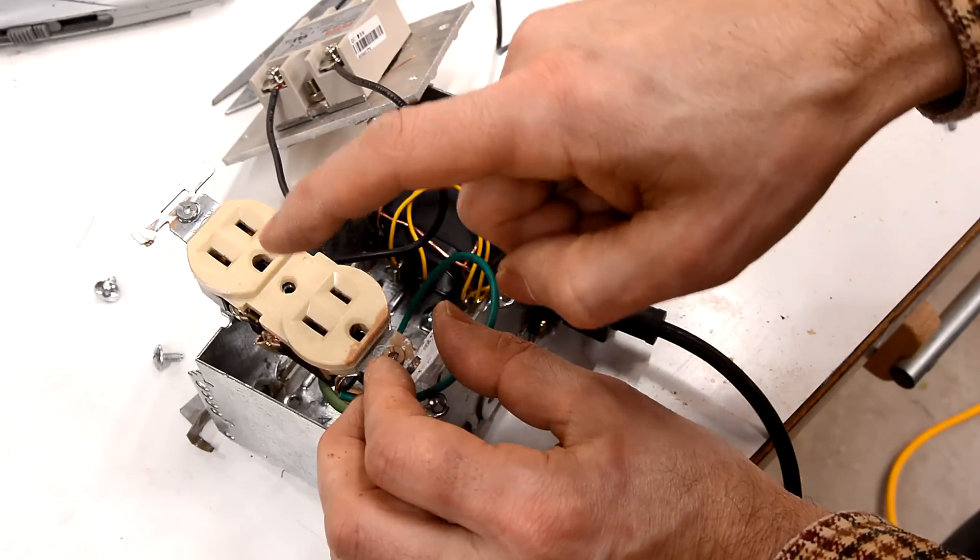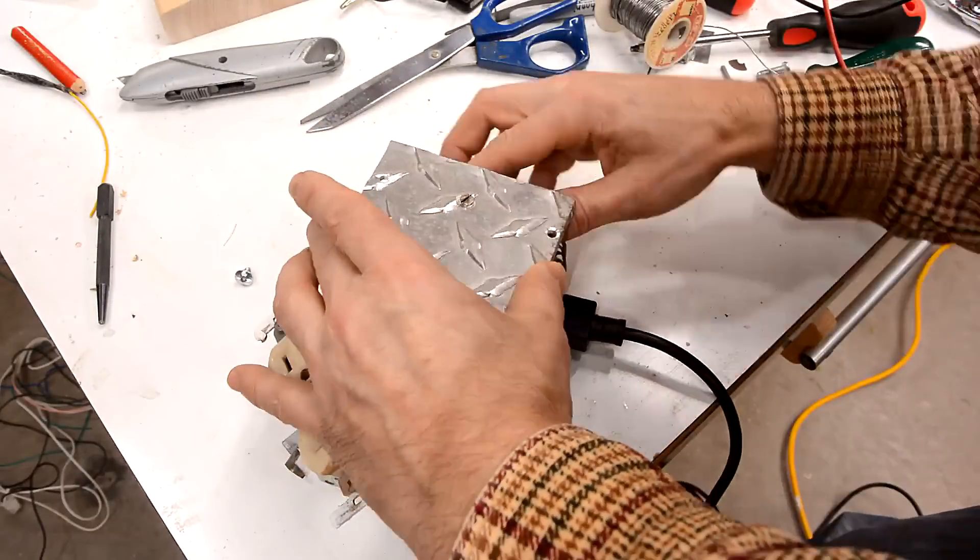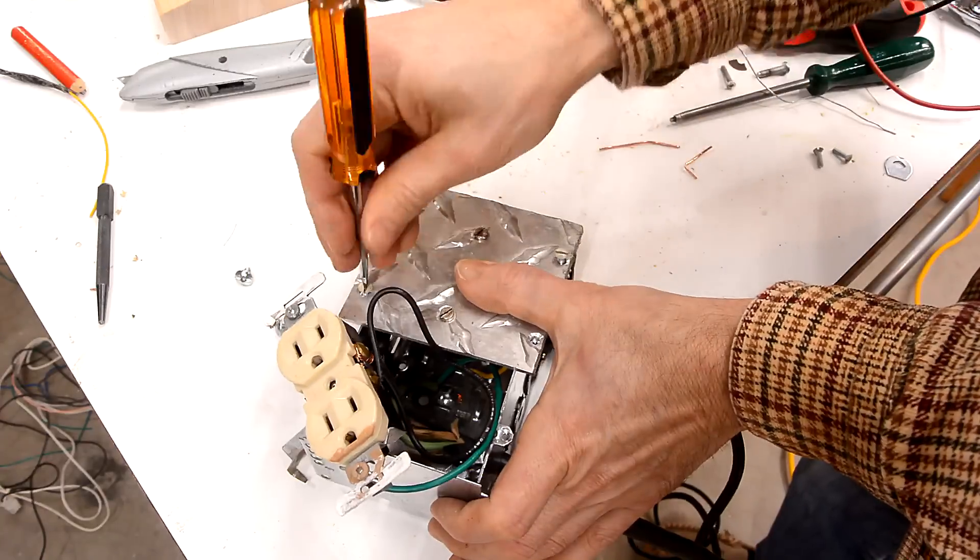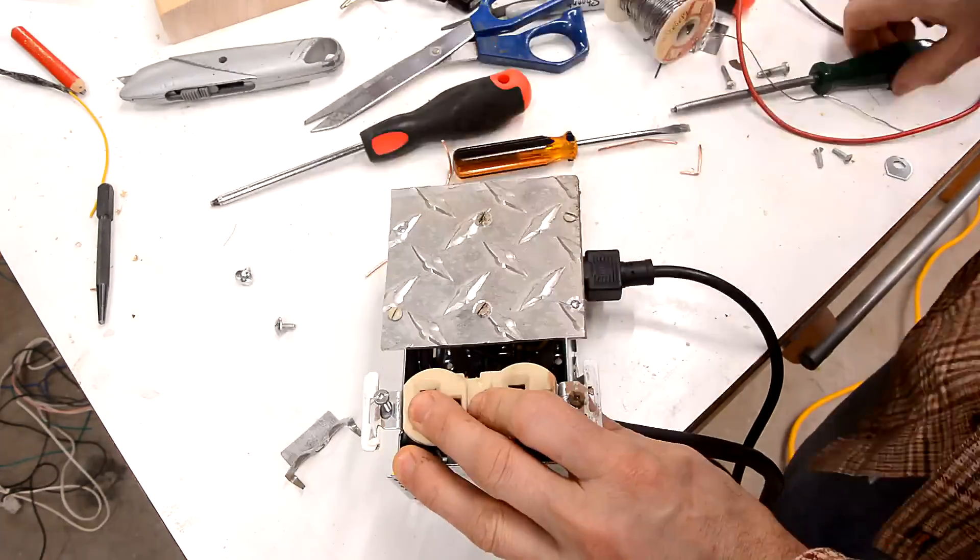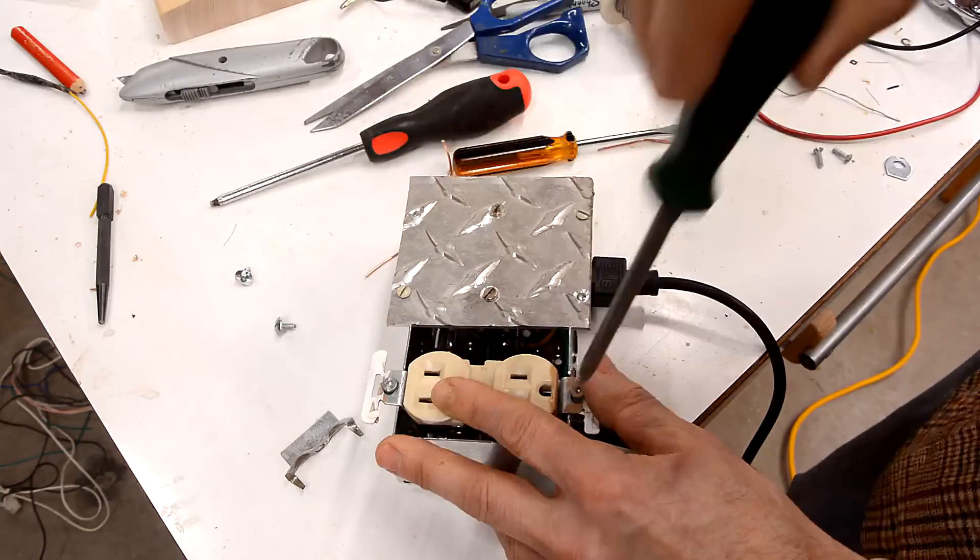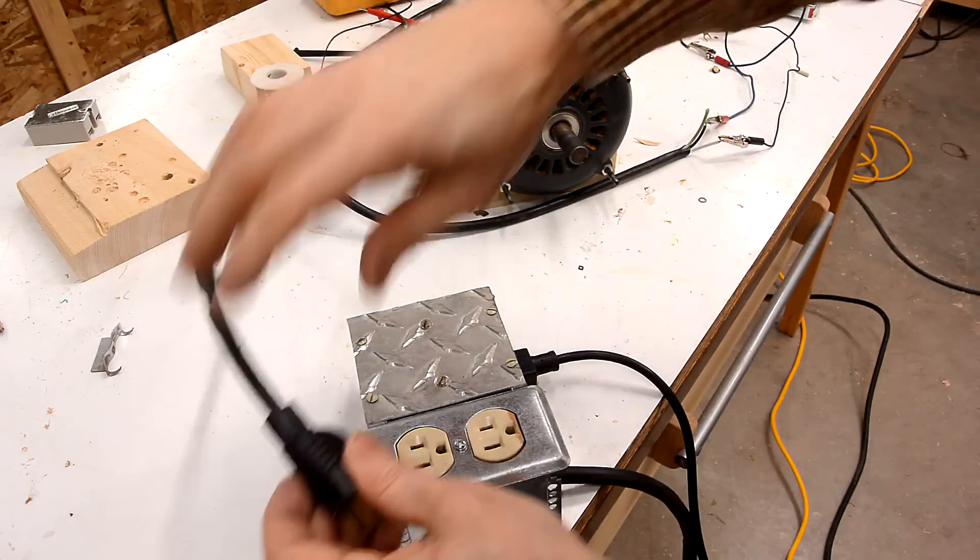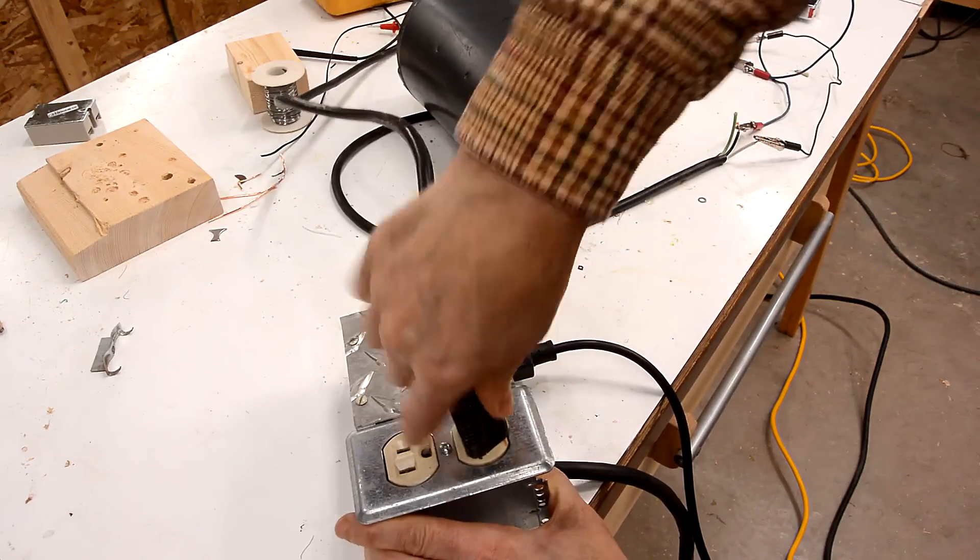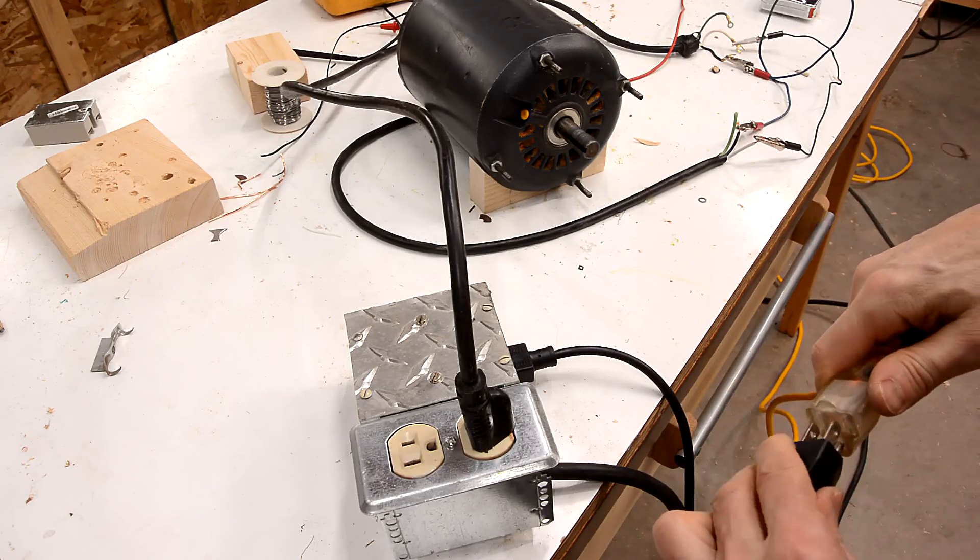So, this is the switched one which will turn on when power is applied to here. All wired up now. So, the top plug is always on. And the bottom plug only turns on with the relay when I apply power here.